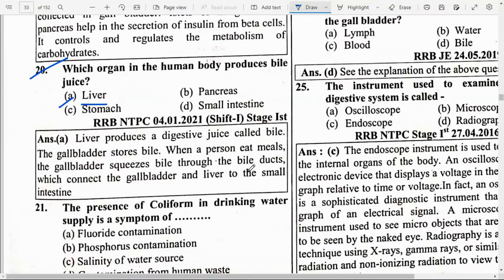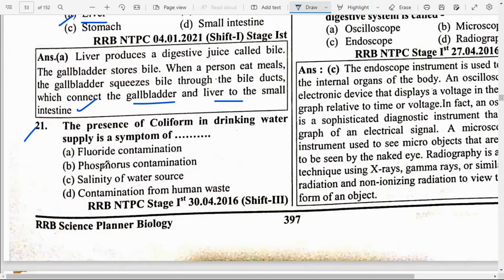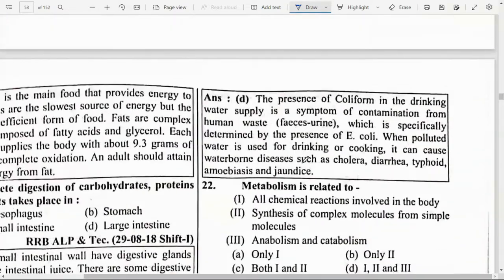Which organ in the human body produces bile juice? Option — Liver. The liver produces a digestive juice called bile. The gallbladder stores bile; when a person eats, the gallbladder squeezes bile through the bile ducts, which connect the gallbladder and liver to the small intestine. The presence of coliform in the drinking water supply is a symptom of option D — contamination from human waste.